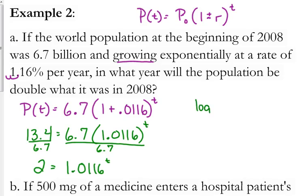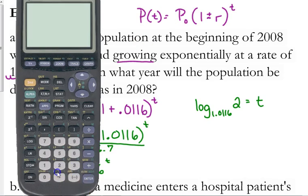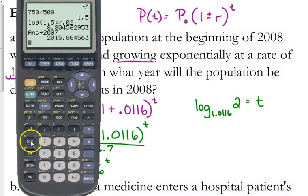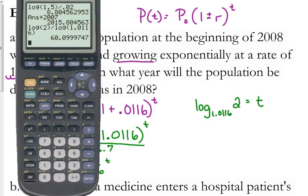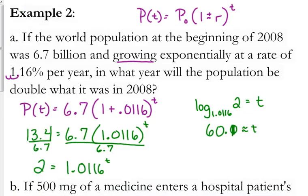Write it in log form, log base 1.0116 of two. I know that looks really weird, but it is what it is. And it wants to know, in what year will this occur, so we need to work this out. The log of two divided by the log of 1.0116. That's going to take a while. 60.1 is approximately t. So we started in 2008, 60 years later, we're talking about the year 2068.